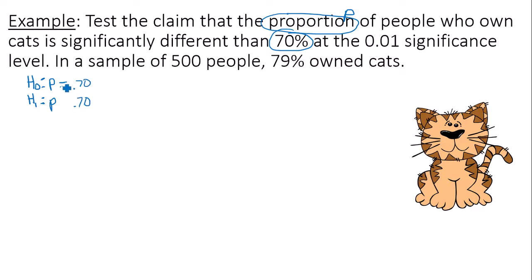The alternative hypothesis, since we're dealing with significantly different, will be not equal to. The alternative hypothesis can either be less than, greater than, or not equal to. In this case, it's not equal to.